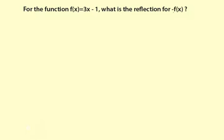So negative f of x means you're making the outputs negative. Negative f of x here means you're making the 3x minus 1 all negative because that's really what the output is. The input is x, the output is 3x minus 1.